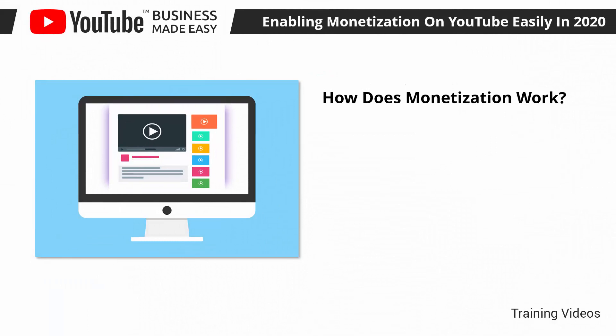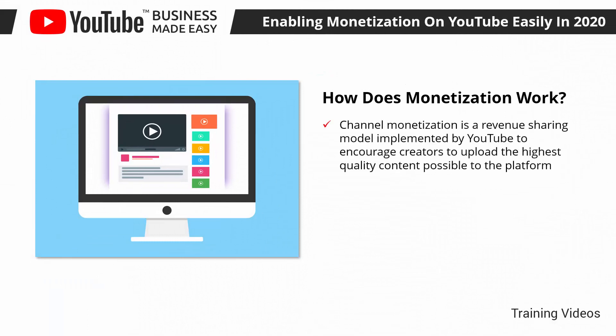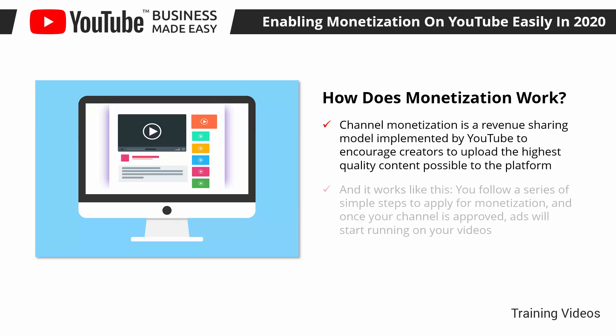How does monetization work? Channel monetization is a revenue-sharing model implemented by YouTube to encourage creators to upload the highest quality content possible to the platform. The more a creator is able to engage viewers and increase watch time, the more money they can make. You follow a series of simple steps to apply for monetization, and once your channel is approved, ads will start running on your videos. Each time a viewer completes watching an ad for a certain period of time, the advertiser pays YouTube for the ad, and you get a cut from that payment.